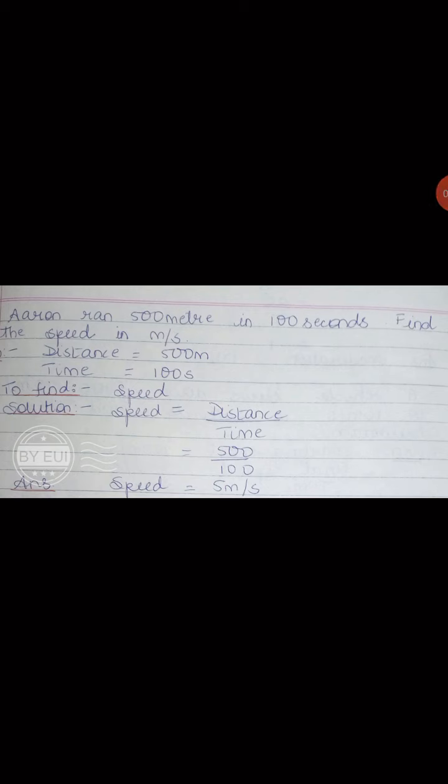Let us take one more example. Aaron ran 50 meters in 100 seconds. Here, meters is the unit for distance, so the distance covered by Aaron is 50 meters, and the time taken is 100 seconds. We have to find the speed in meters per second.